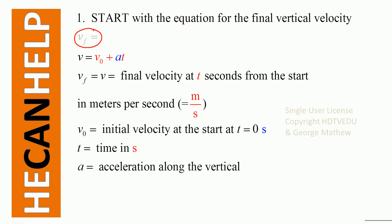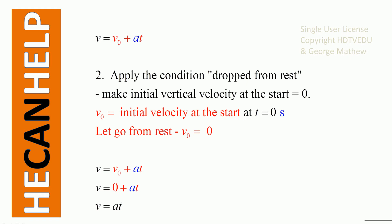What is v0? v0 is the initial vertical velocity. What is a? Acceleration along the vertical. What is t? Time in seconds. So we have the starting equation v equals v0 plus at.